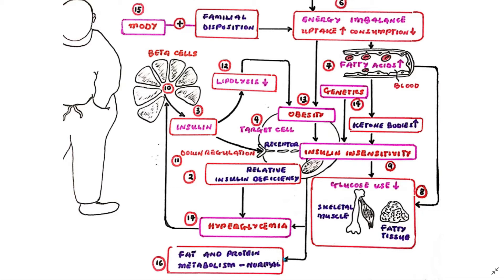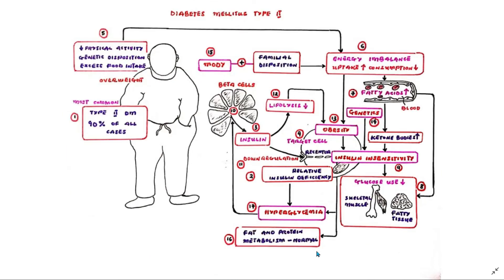Therefore, type 2 diabetes tends to cause massive hyperglycemia without corresponding impairment of fat metabolism.